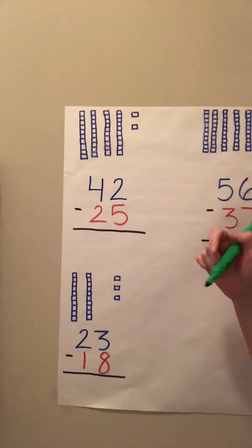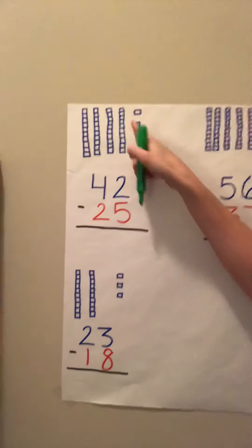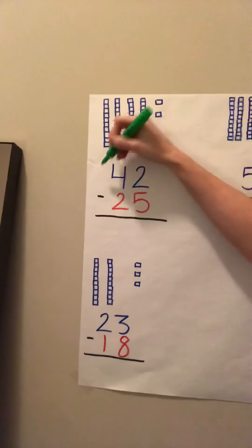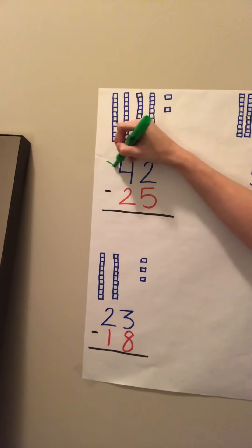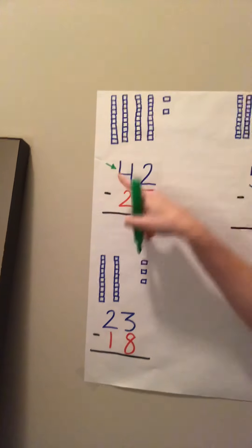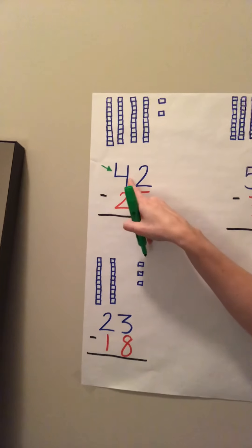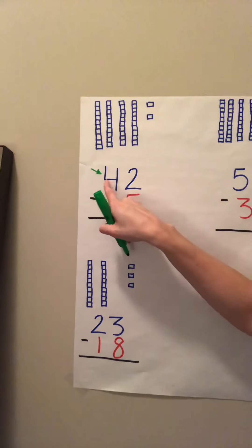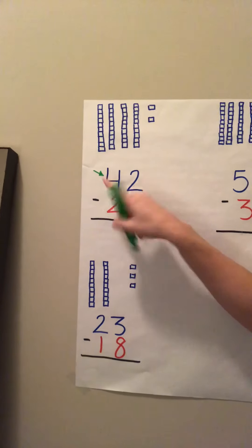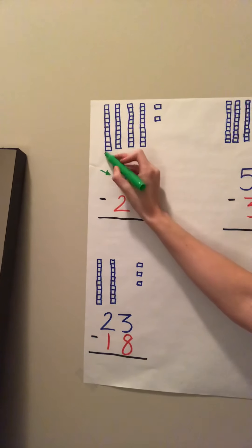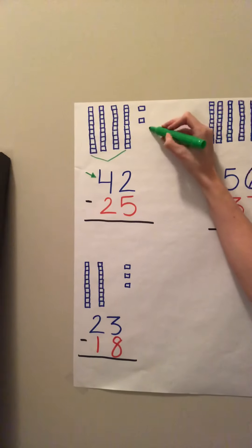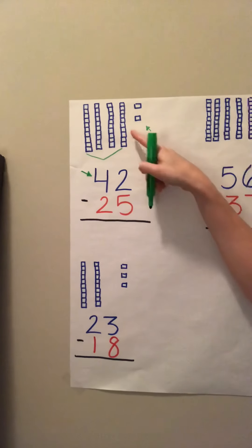So when we're doing our subtracting using our base ten box, we're always going to draw our base ten box to represent the number we're starting off with. So we're starting with the number 42, so I have my four tens and then my two ones.